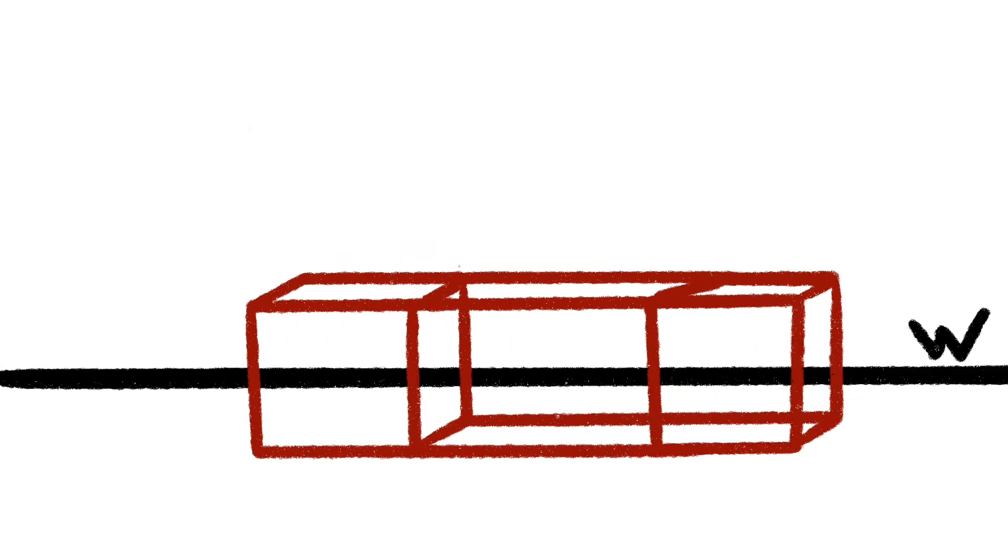A tesseract is the four-dimensional analog to the cube in three-dimension. In order to make a cube, we can take a two-dimensional slice of a square and drag it along the z-axis. Similarly, we'll take our three-dimensional cube and slide it along the fourth dimension.